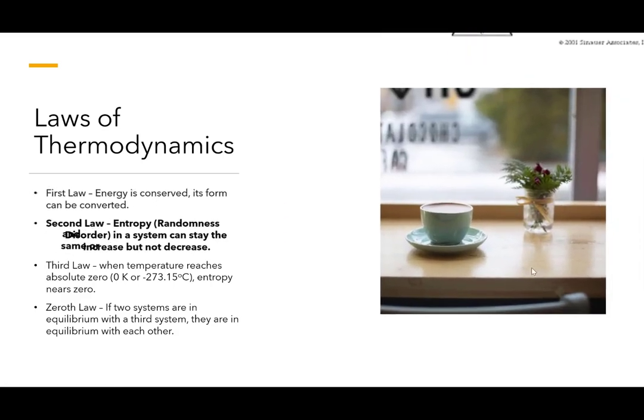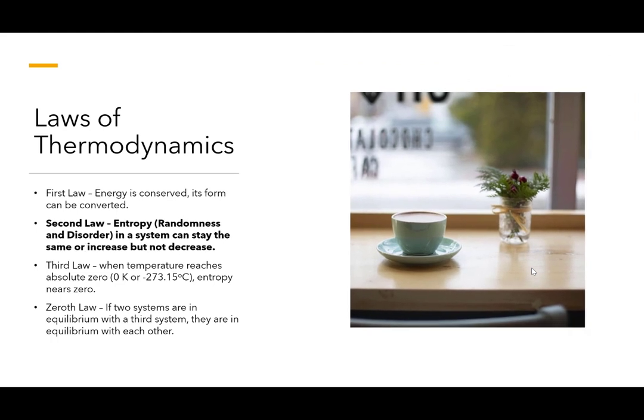While the second law, it states that entropy, which means randomness and disorder, in a system can stay the same or increase but not decrease. It asserts that energy has quality as well as quantity. And actual processes can occur in the direction of decreasing the quality of energy.